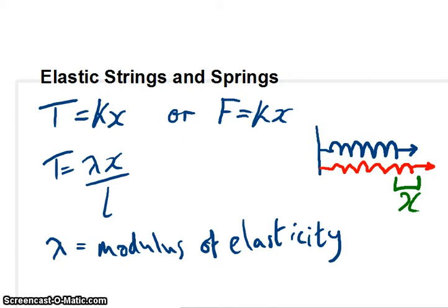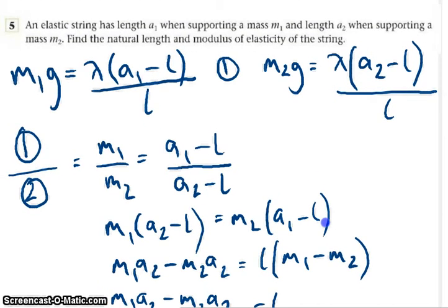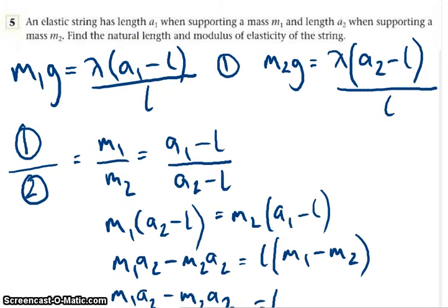Now, I wanted to show a little question just to demonstrate how this works. So I picked a nice short question and then realised my mistake because it was a bit tricky. So bear with me as we step through the algebra. An elastic spring has a length A1 when supporting a mass M1 and a length A2 when supporting a mass M2. Find the natural length and modulus of elasticity of the string.